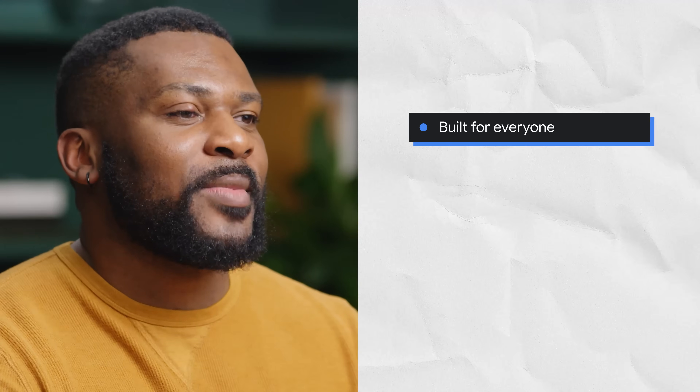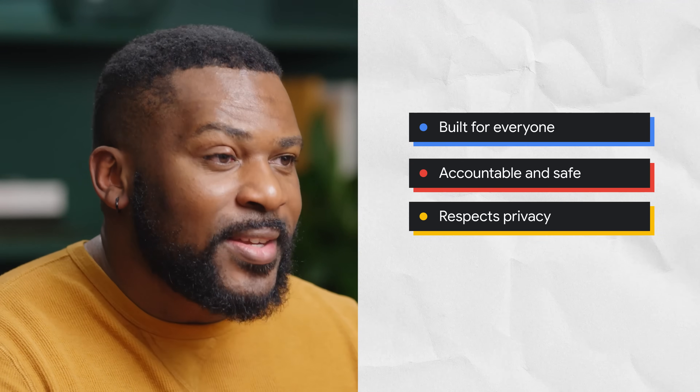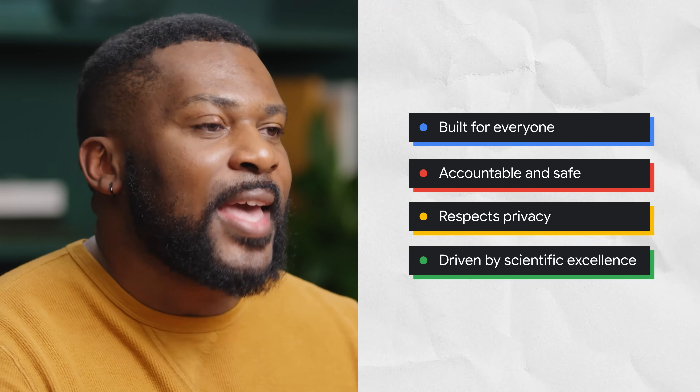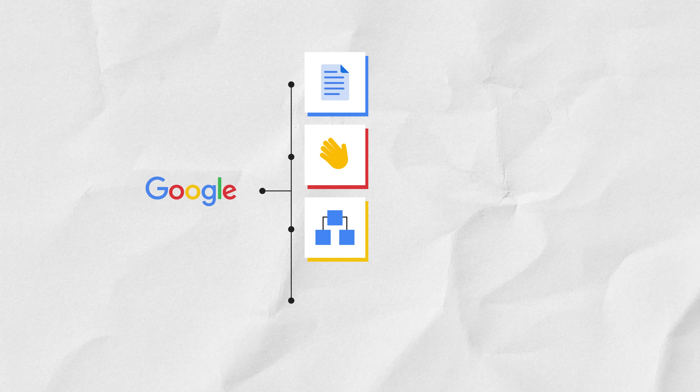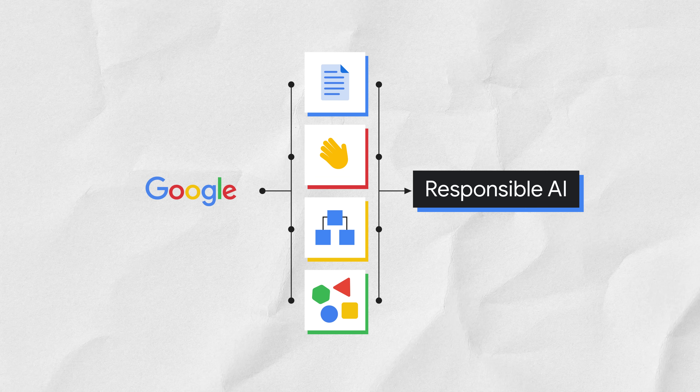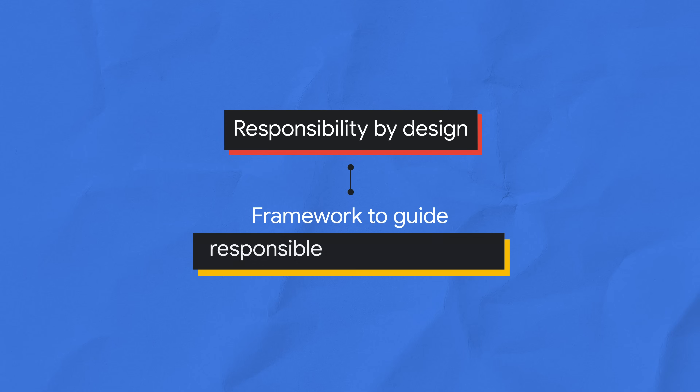Our approach to responsible AI at Google is rooted in a commitment to strive towards AI that's built for everyone, that's accountable and safe, that respects privacy, and that is driven by scientific excellence. We've developed our own AI principles, practices, governance processes, and tools that together embody our values and guide our approach to responsible AI. We've incorporated responsibility by design into our products and organization, using our AI principles as a framework to guide responsible decision-making.